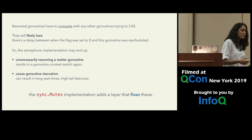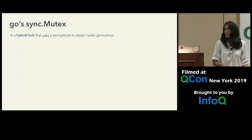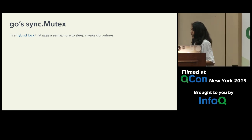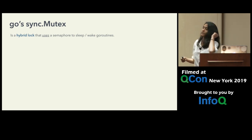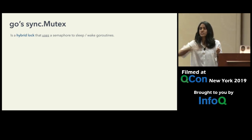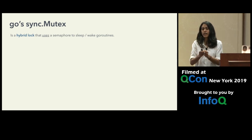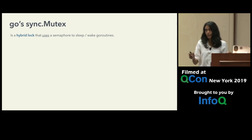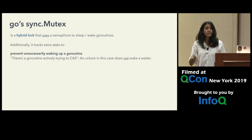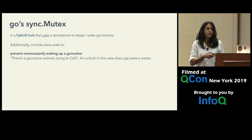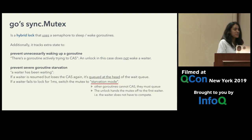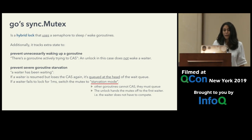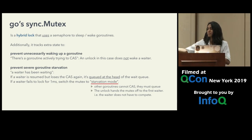So the Go runtime adds another layer of sophistication around the semaphore, and this nicely-wrapped package is the sync.mutex that our applications use. The sync.mutex is a hybrid lock: if the compare-and-swap fails, the goroutine first spins a fixed number of times, and if that fails, it uses the semaphore to sleep and resume. But it's not a simple hybrid lock — it has additional state tracking that fixes the starvation and unnecessary wake-sleep problems.